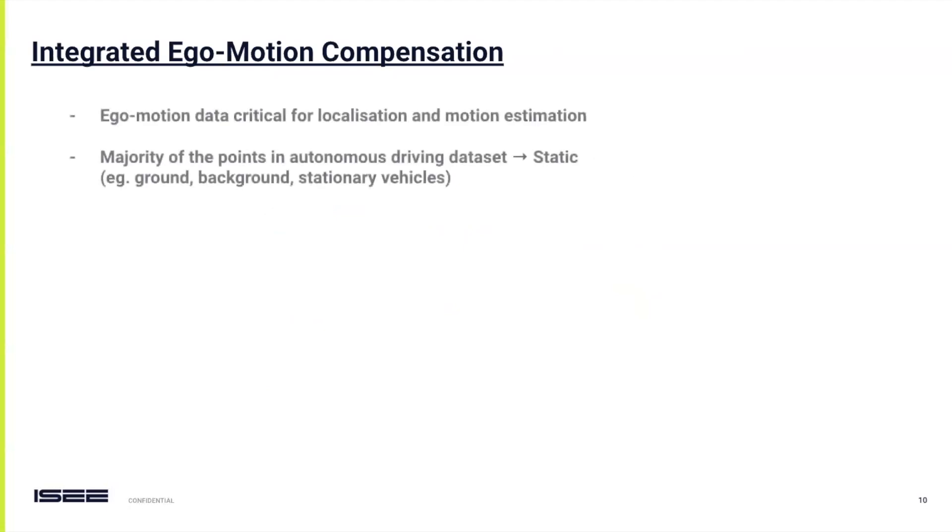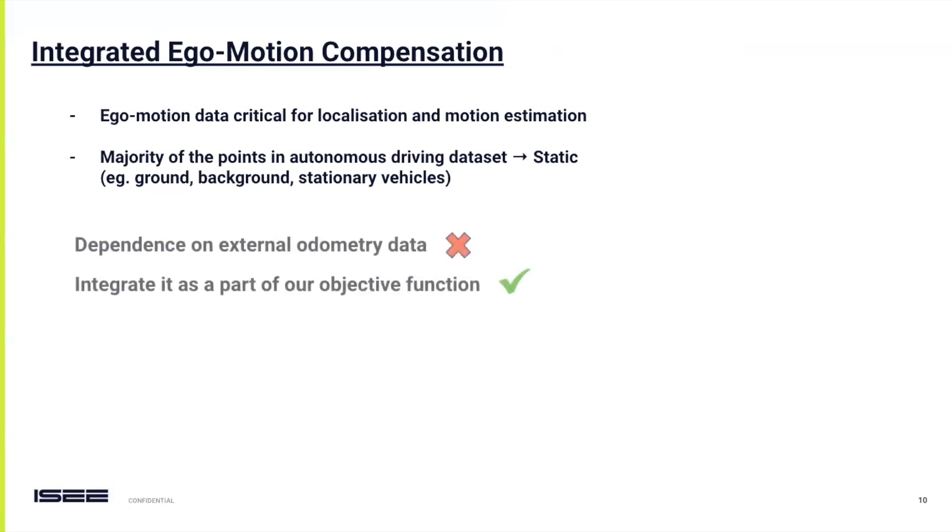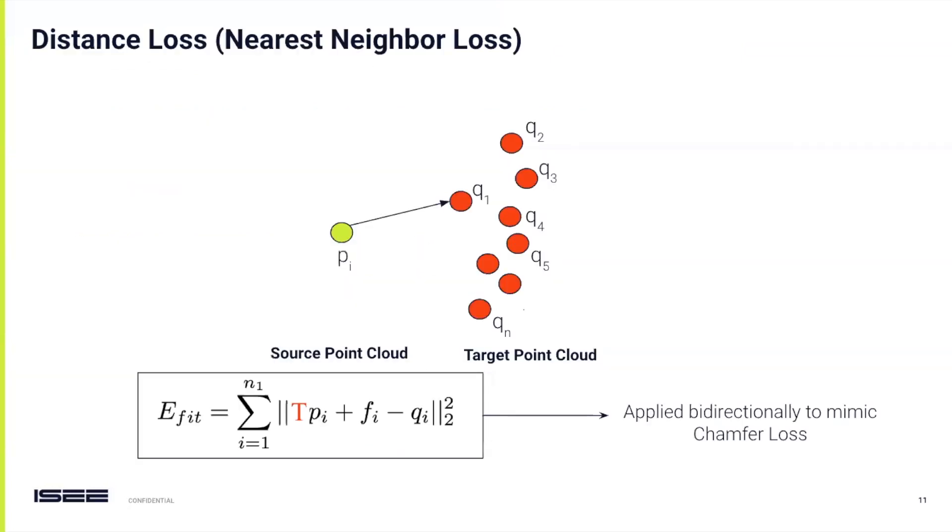In real-world scenarios such as autonomous driving, the majority of data points are static. By integrated ego-motion compensation, we can simplify the scene flow estimation process. This involves aligning input point cloud pairs and focusing on dynamic points. Standard datasets provide ego-motion data, but its accuracy can be questionable. By incorporating a transformation function denoted as T into our optimization, we independently estimate the transformation alongside the flow vectors, transforming the current point cloud into the subsequent frame and minimizing distance errors. This changes our fit function and we get transformation T as a part of it.